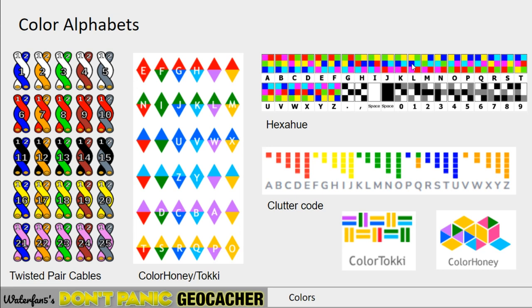Another popular one — because it just looks bright, cheerful, and confusing, almost like noise — is Hexiu, where it uses the same six colors but in a different order to indicate a letter. Combine a bunch of those and you get a very confusing picture. And then there is one that's specific towards counting, where it doesn't have to be blocks — it could be anything that stacks different reds and yellows together, and it all maps to an alphabet.